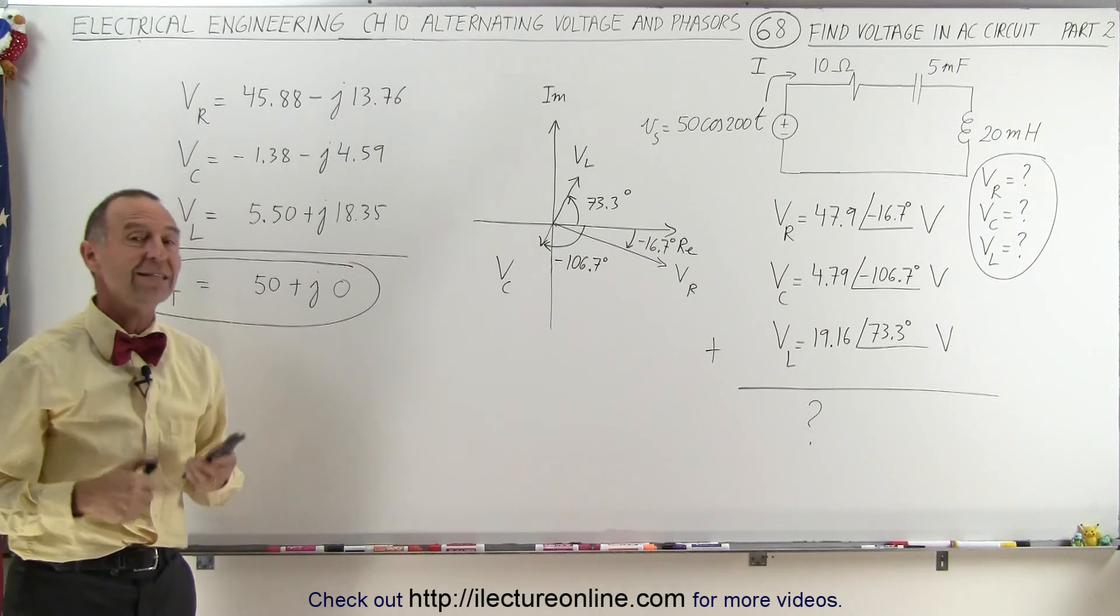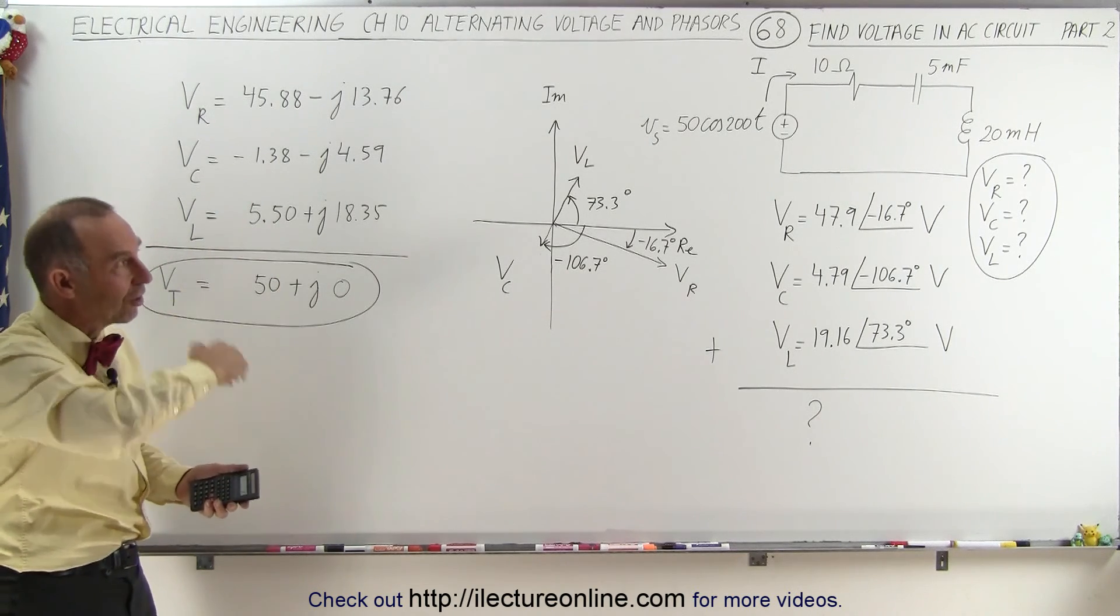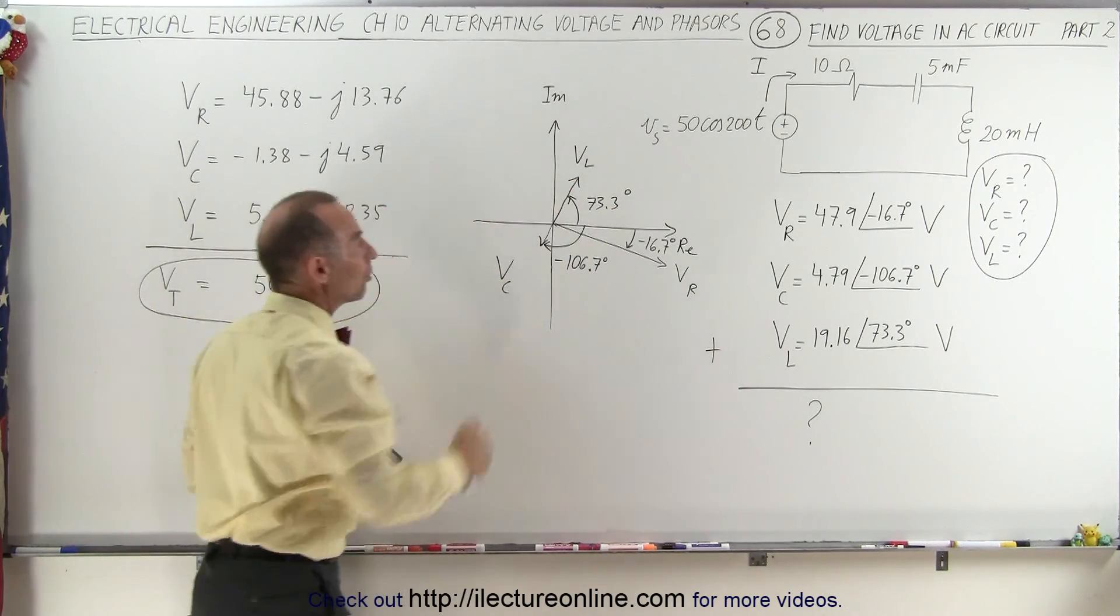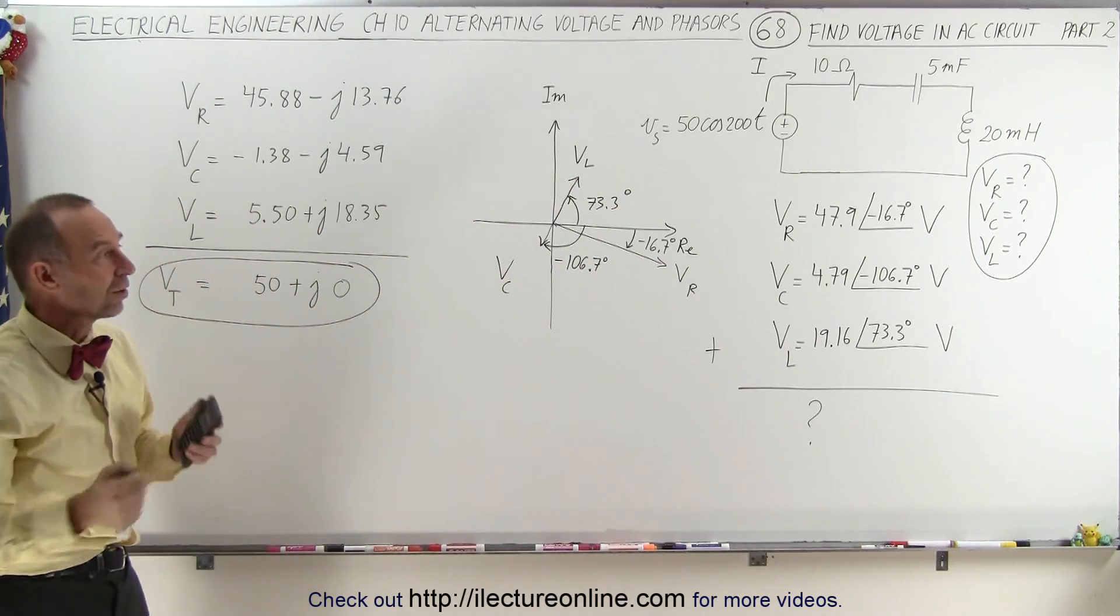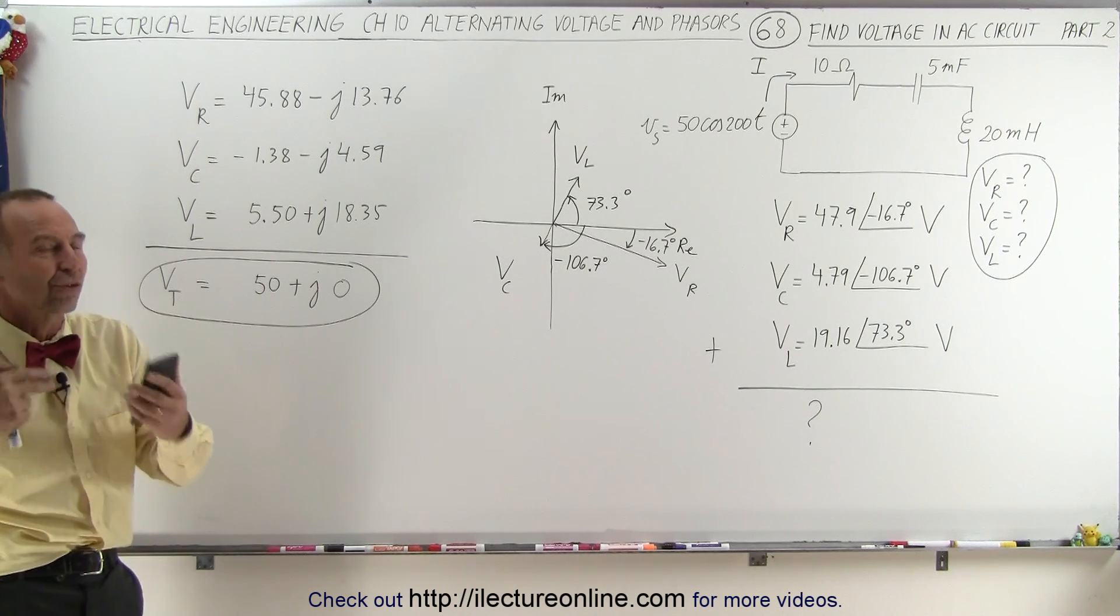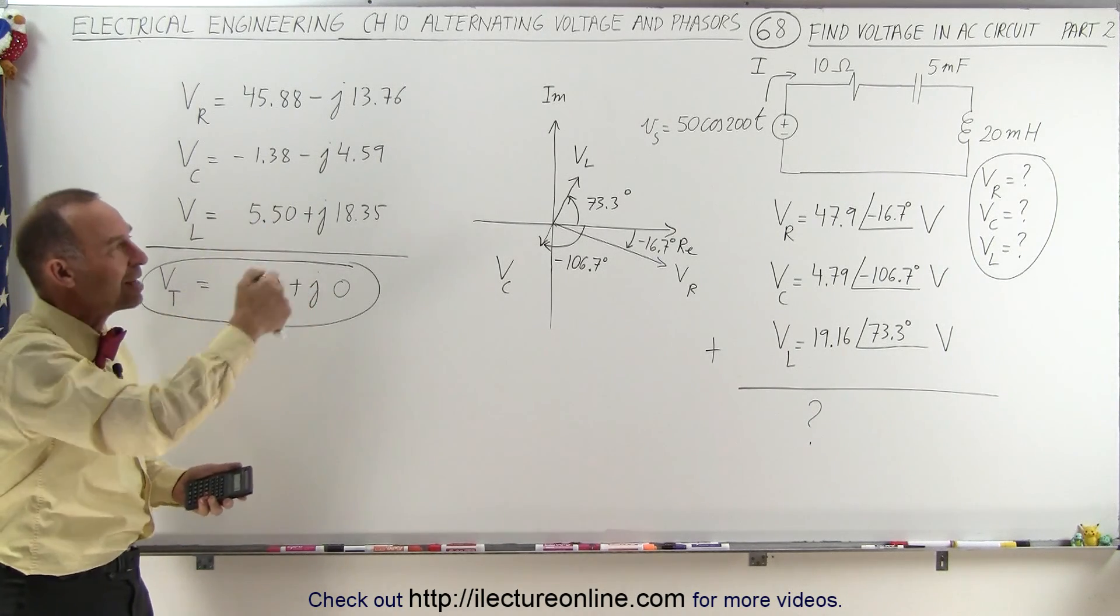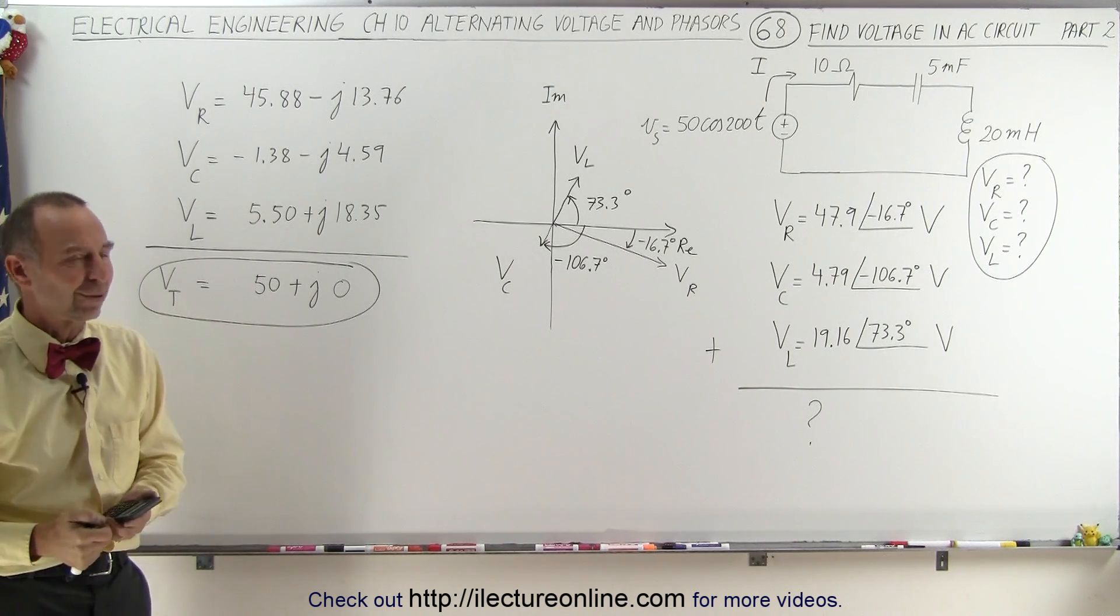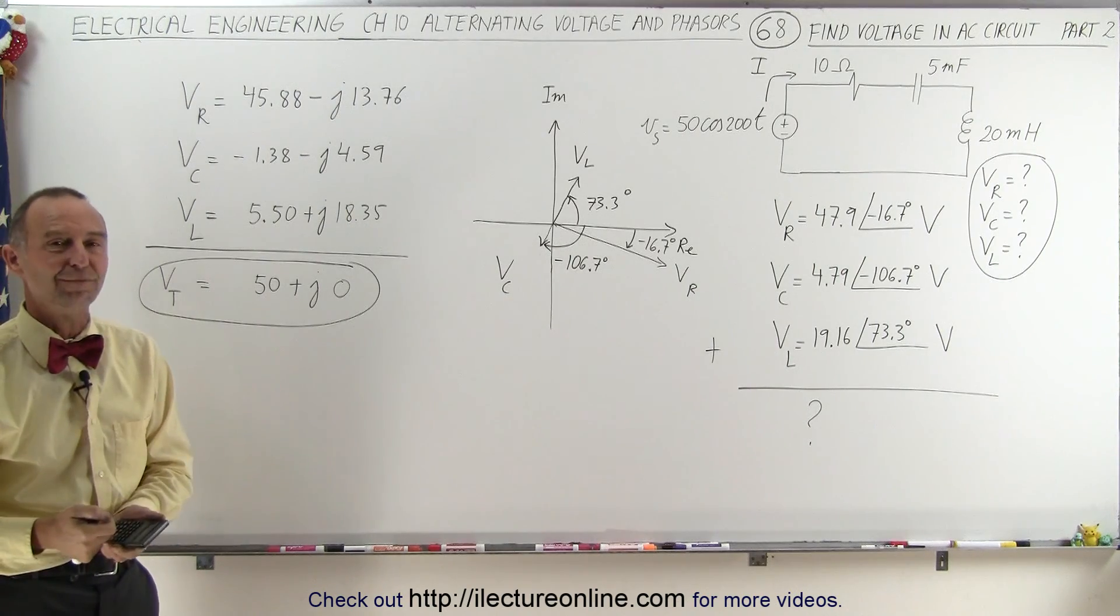And so now you can see that when I add all the voltages of all the three components, taking into account that there's a phase difference between them, then you get the right result saying the total voltage drop across all the devices in the circuit will equal the voltage of the source in an AC series circuit. And that's how it's done.